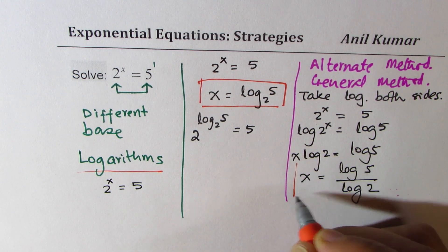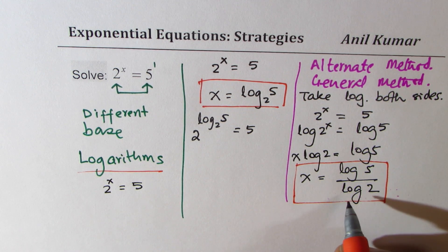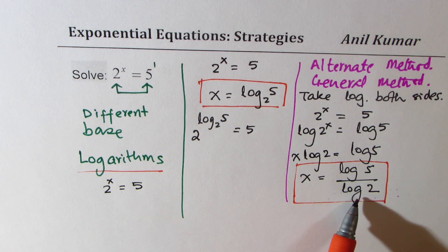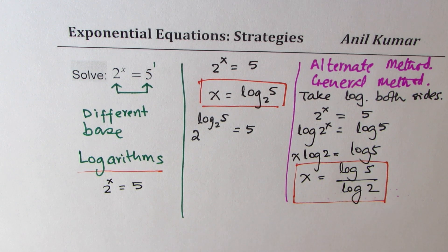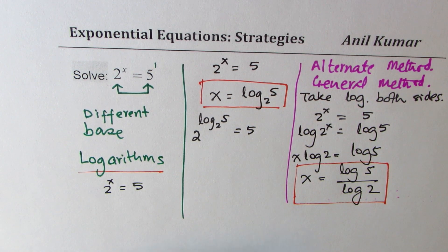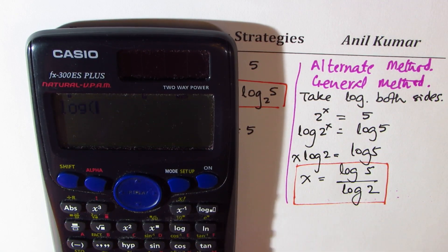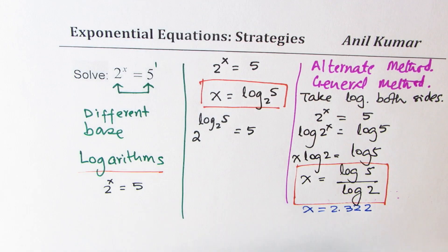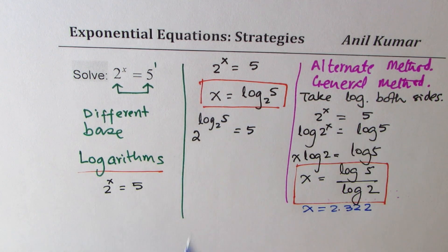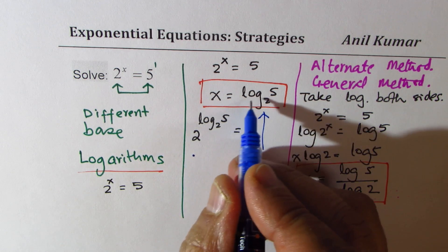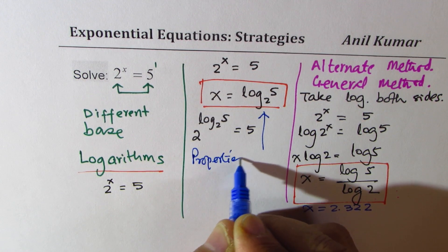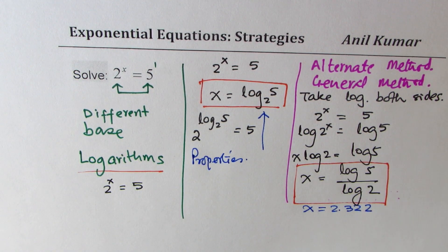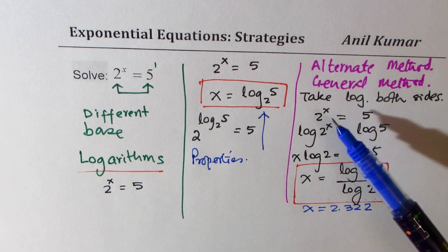So x equals log 5 divided by log 2. We now have two different-looking solutions: x equals log base 2 of 5 (exact, base 2), and x equals log 5 over log 2 (base 10). You can use a calculator to find decimal values. Computing log 5 divided by log 2 gives x approximately equals 2.322, rounded to 3 decimal places. The first is the exact solution from logarithm properties; the second is the general method of taking log on both sides. Either method may be used.